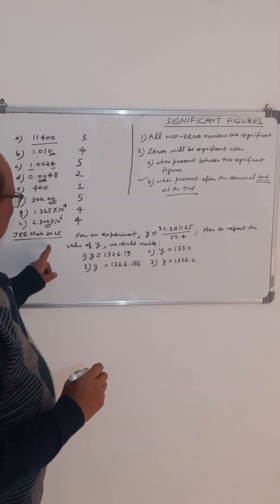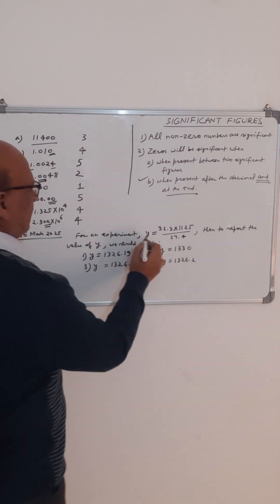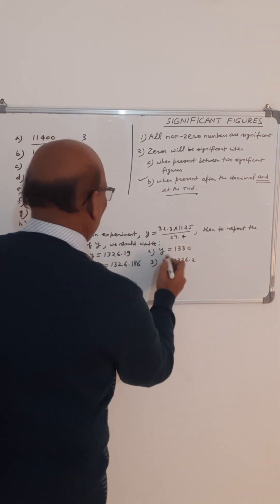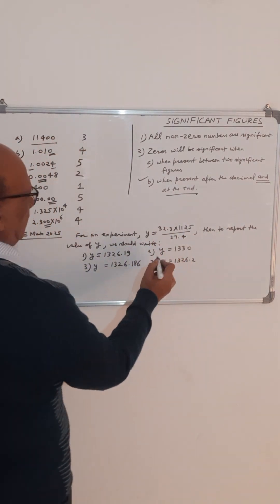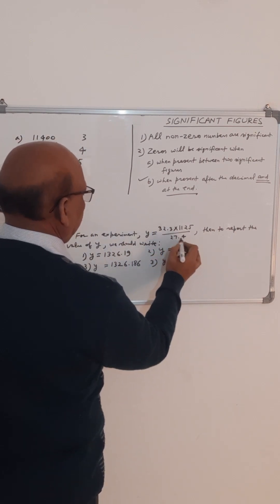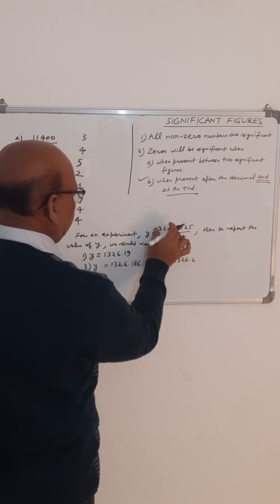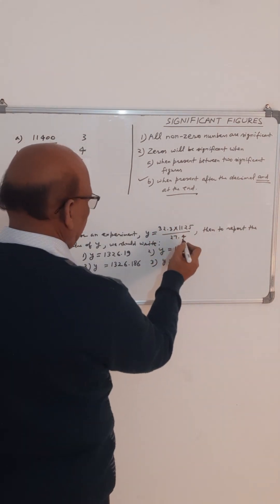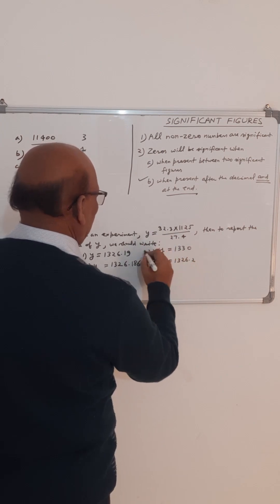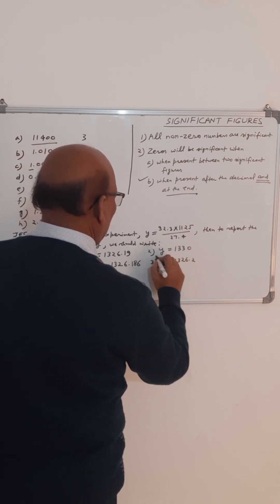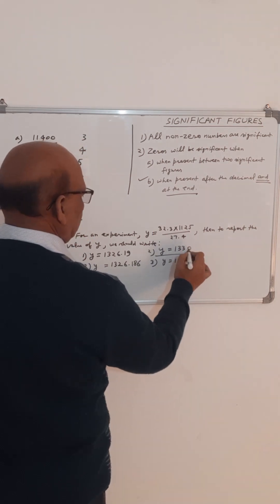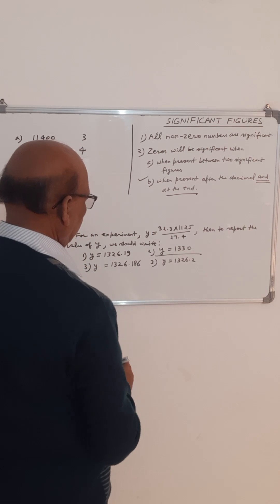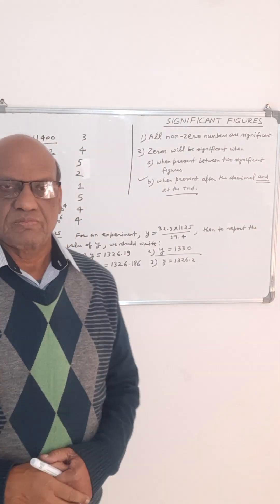This question was asked in JEE Main 2025: for an experiment, y is equal to a given expression. To report the value of y, we should consider that the minimum number of significant figures present is 3. So we have to consider the answer in the minimum number of significant figures. Here y will be equal to 13 significant figures — this has only 3 significant figures. This zero is not significant. Thank you and wish you all the best.